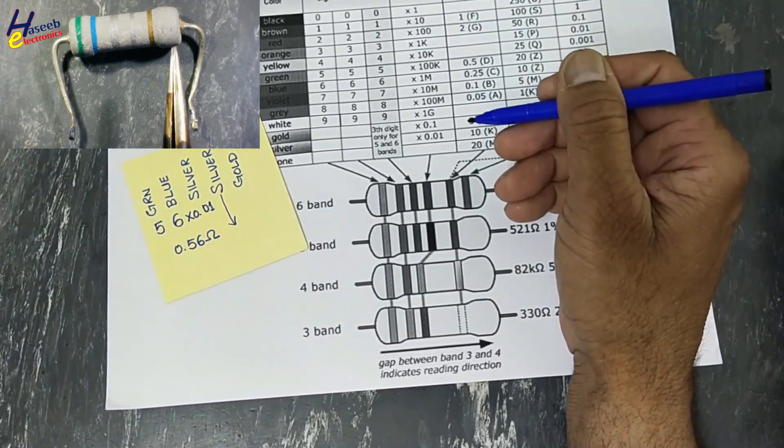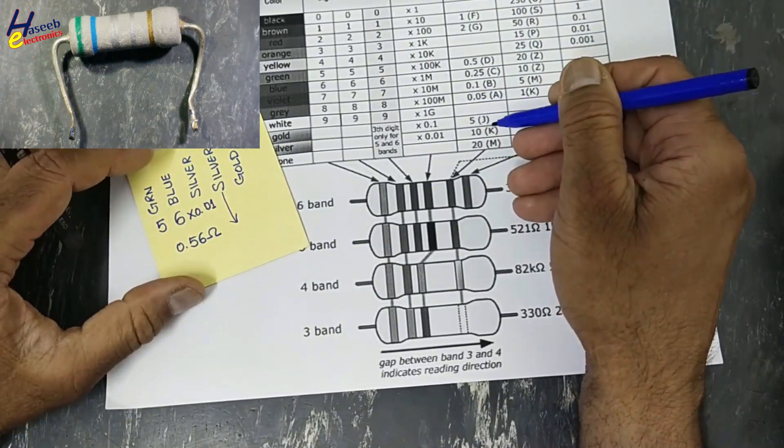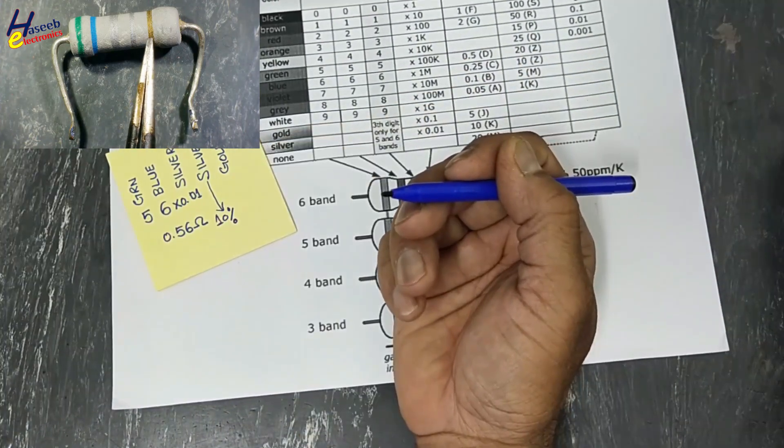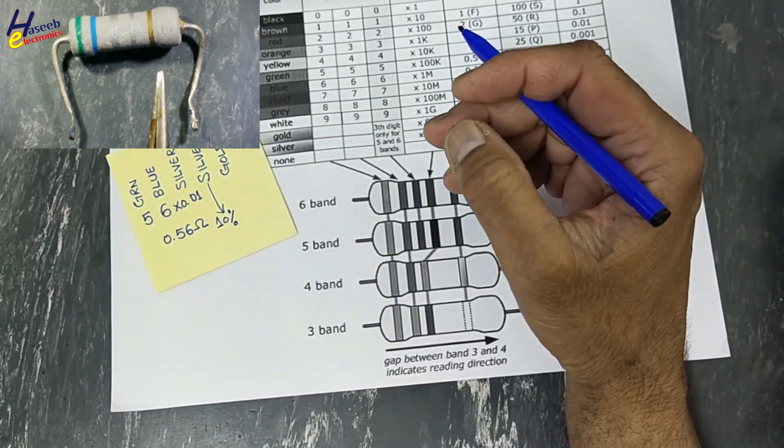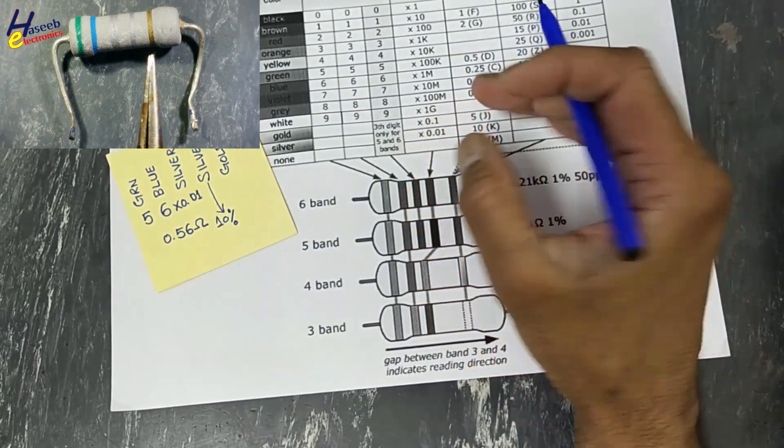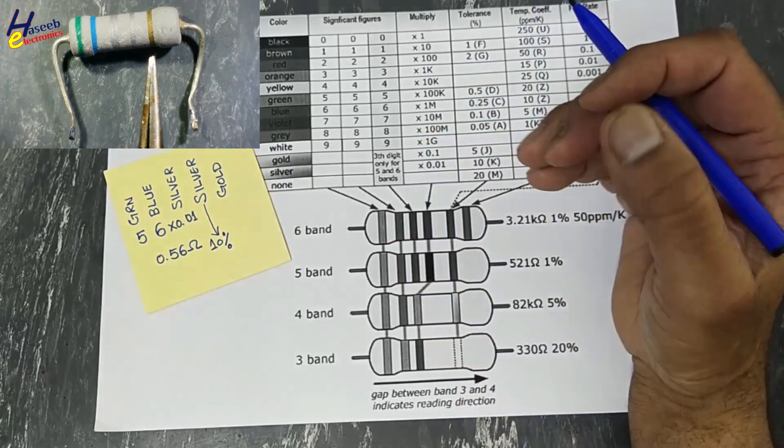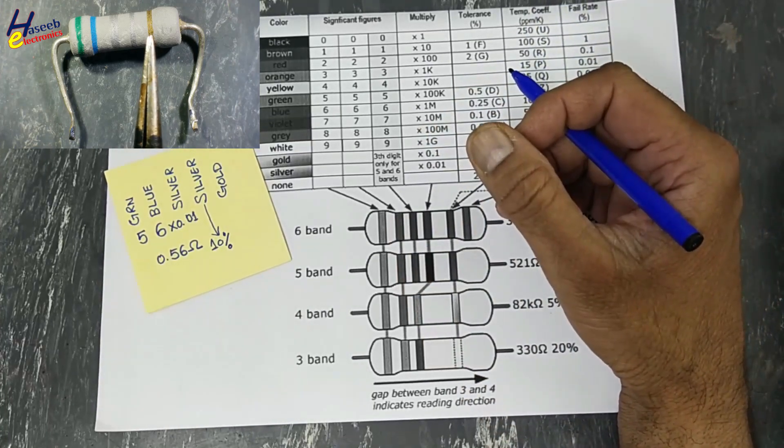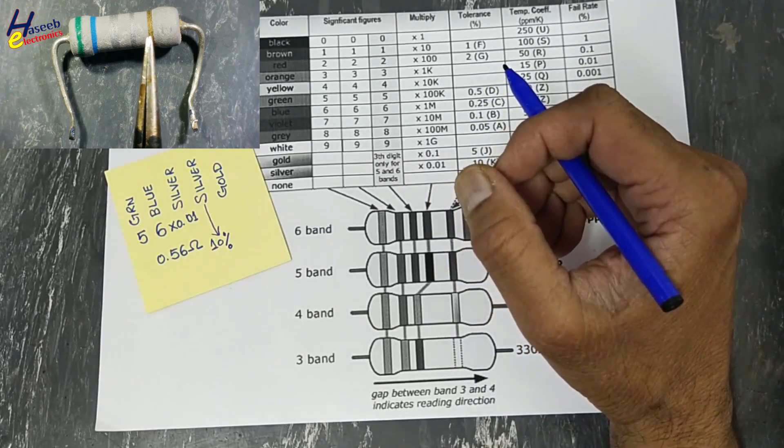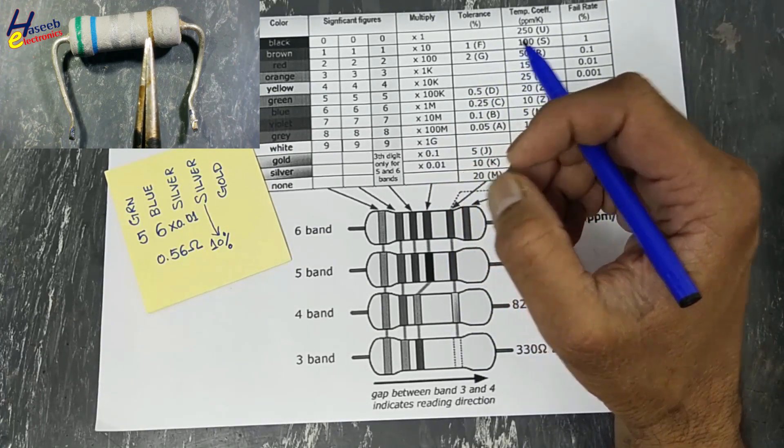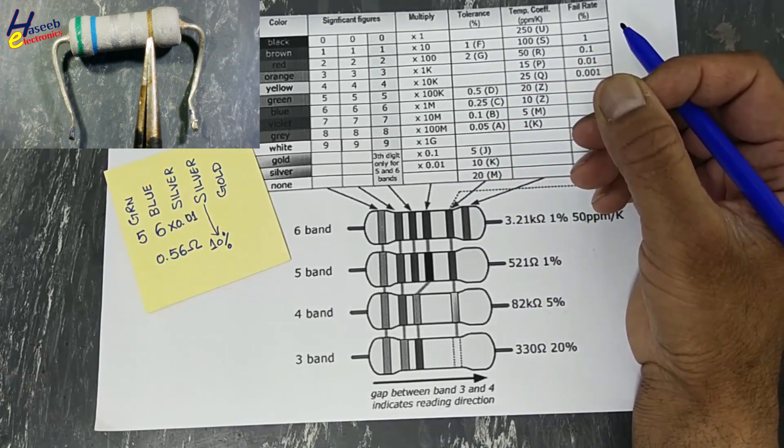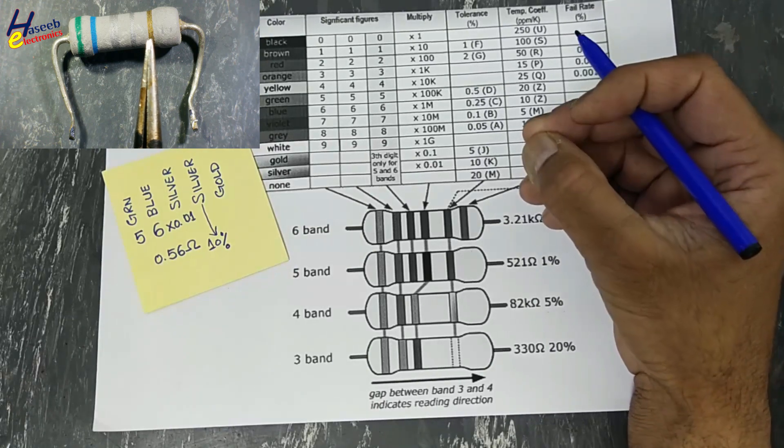Then there is gold. If the last band is silver or gold, that is a high reliability resistor. It is named as a failure rate. If any band other than this, that is called tempco band or temperature coefficient band. But in this resistor, it is a failure rate or reliability band.